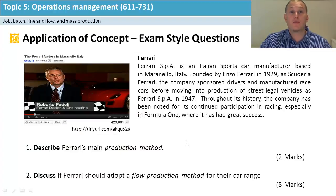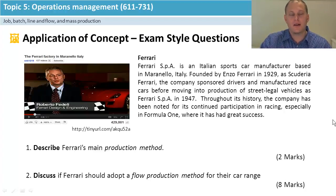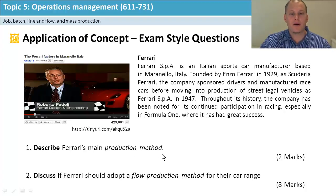Here's an exam-style question you might see. I've got a tiny URL for the Ferrari factory in Maranello, Italy — pause and have a look if you like. Two key questions: can you describe the production method, and can you discuss whether they should change to flow production for eight marks? I've done eight marks rather than six to get you working through two advantages and two disadvantages. Ferrari's main production method would be job or batch depending on the video — probably not flow, line, or mass.